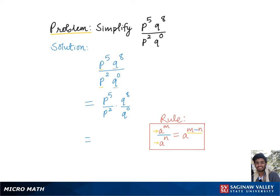So here in our problem, for this fraction, we'll keep the common base p and raise this to the numerator power 5 minus denominator power 2.